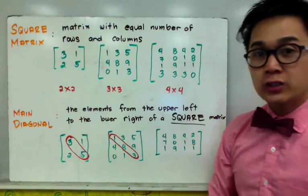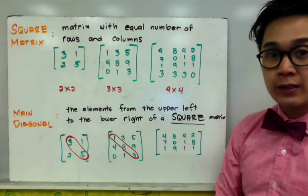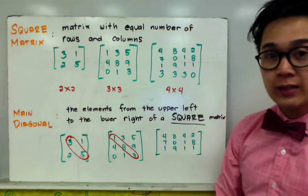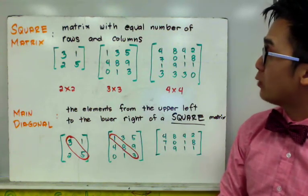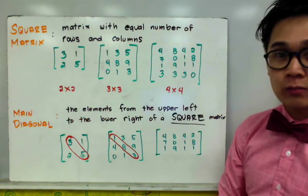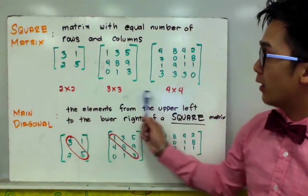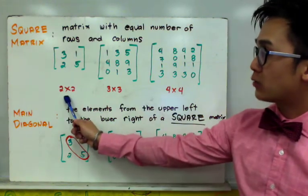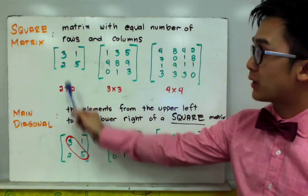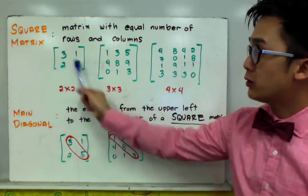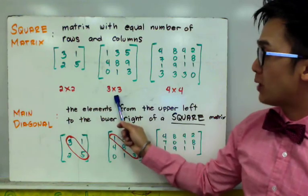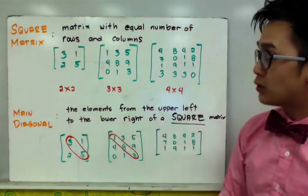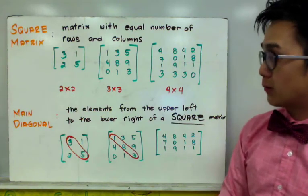Another important terminology in matrices is the square matrix. A square matrix in linear algebra is a matrix with an equal number of rows and columns. Examples include a 2 by 2 matrix with 2 rows and 2 columns, a 3 by 3, and a 4 by 4. All are called square matrices because they have the same number of rows and columns.